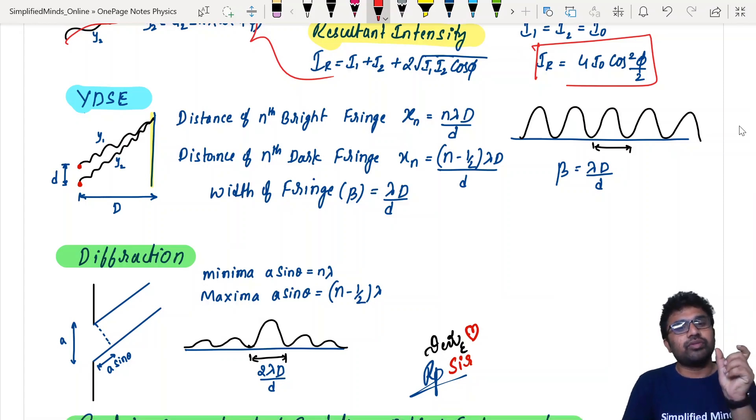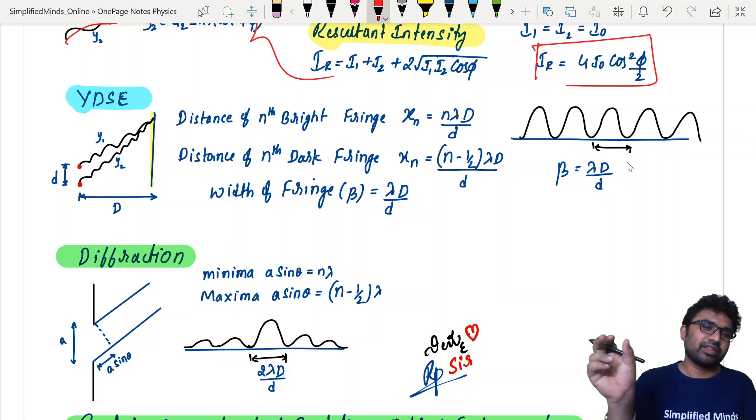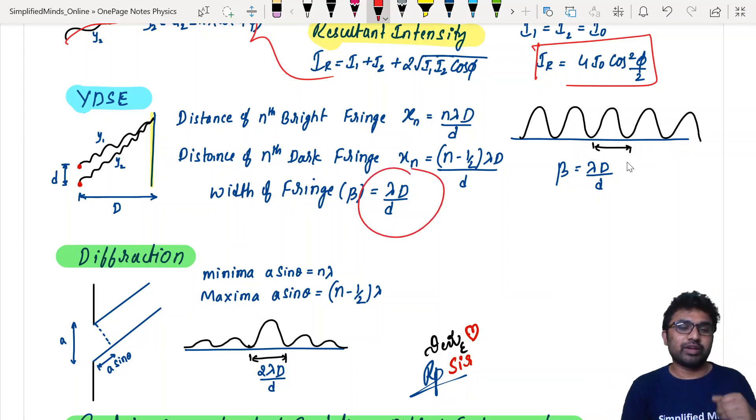Also, the width of the fringe beta is equal to lambda D by d. All the fringes are equal width, lambda D by d. In fact, you have a proof also for this. I mean, it was there in PUC.